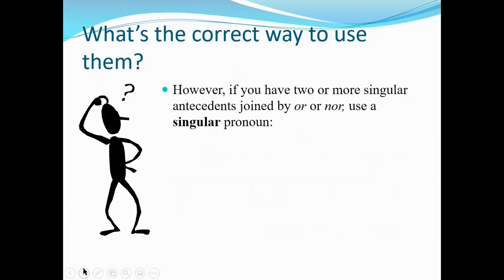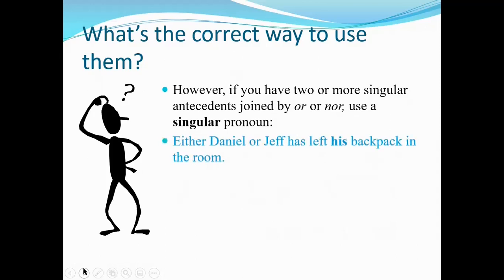However, if you've got two or more singular antecedents joined by 'or' or 'nor,' you use a singular pronoun. 'Either Daniel or Jeff has left his backpack in the room.' Daniel and Jeff don't share a backpack, so you would not say 'their backpack.' With 'either/or' or 'neither/nor,' you're referring to just one of them, not both.